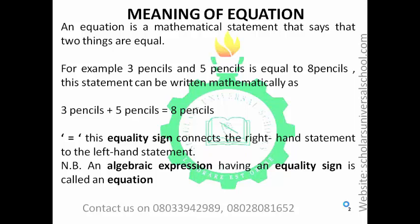We can also express this in mathematical form: 3 pencils plus 5 pencils equals 8 pencils. The value at the left-hand side is equal to the value at the right-hand side. The sign of equality connects the left-hand side statement to the right-hand side statement. Any algebraic expression that has an equality sign is referred to as an equation.